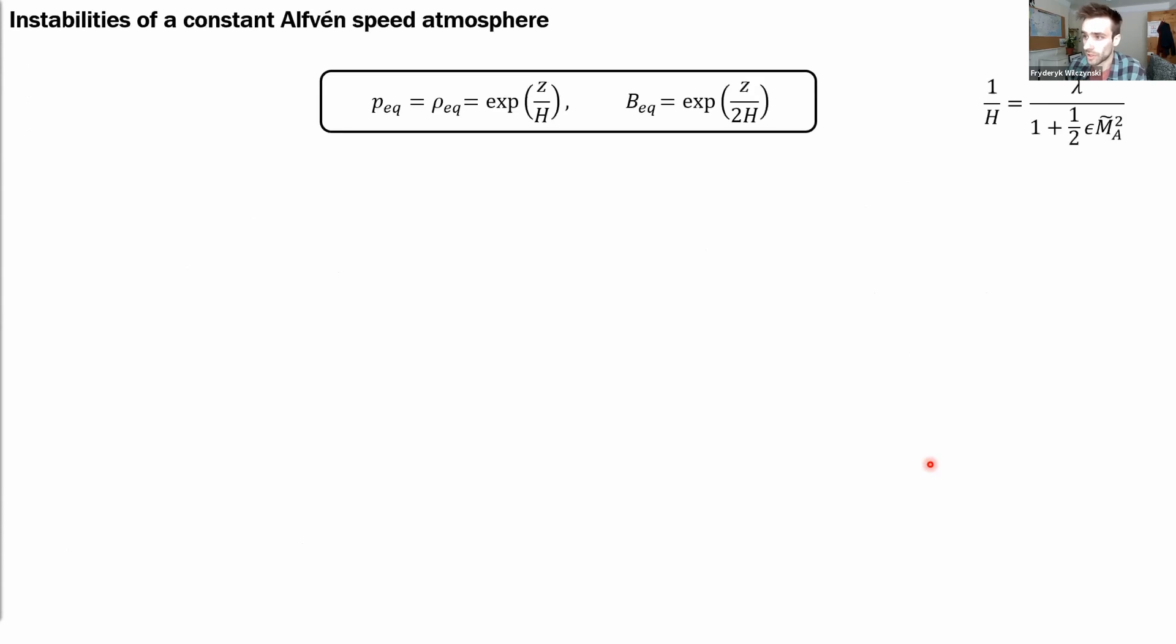So in that special case for which we can write down the analytic dispersion is the case in which the stratification of the atmosphere varies exponentially. And in that case,